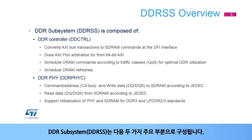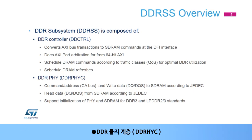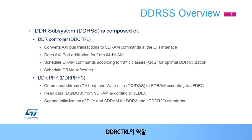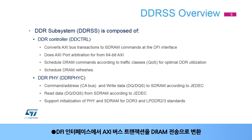The DDR subsystem, or DDRSS, is composed of two main parts: the DDR controller, or DDRCTRL, and the DDRPHY, or DDRPHYC. DFI is the standard interface between the DDR controller and the DDRPHY. The DDRCTRL is in charge of converting AXI bus transactions to DRAM transfers at the DFI interface.